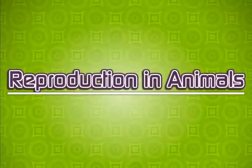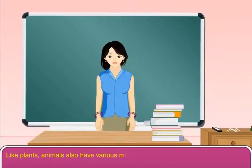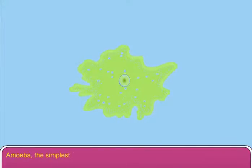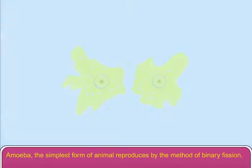Reproduction in Animals. Like plants, animals also have various methods of reproduction. Amoeba, the simplest form of animal, reproduces by the method of binary fission.